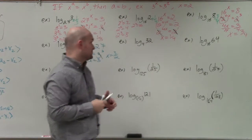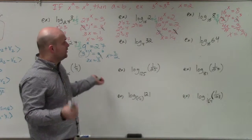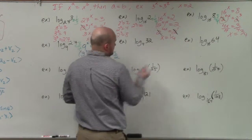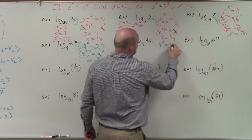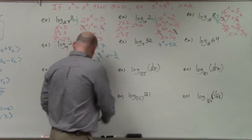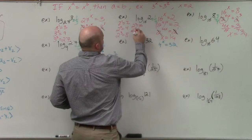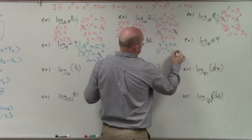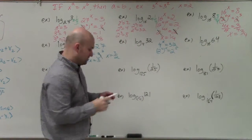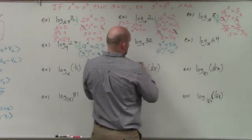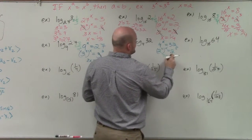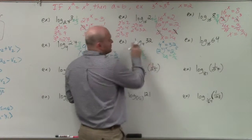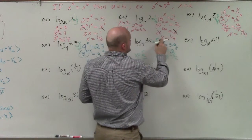Over here I have 4 raised to what power equals 32. Since 4 squared is 16 and 4 cubed is 64, that doesn't work directly. But looking at powers of 2, 2 to the fifth power equals 32. So I rewrite this as 2 squared raised to the x equals 2 to the fifth. Therefore 2x equals 5, divide by 2, and x equals five-halves. So log base 4 of 32 equals five-halves.